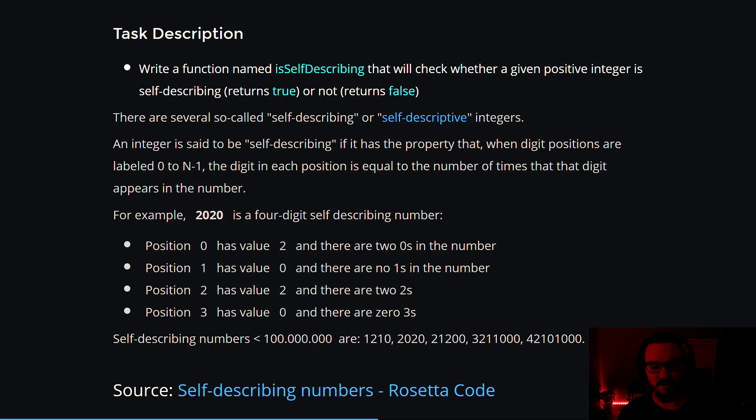Now finally, we end up at position or index three, which has a value of zero, and that just tells us that there are zero threes in this number. Again, 2020 doesn't have any threes, so that checks out.